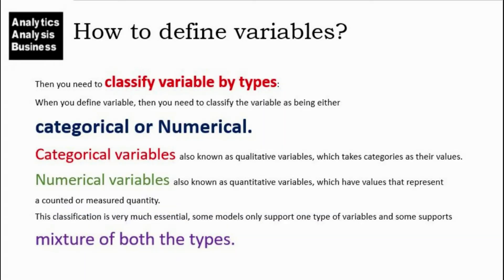Then you need to classify variables by types. When you define a variable, you need to classify it as either categorical or numerical. Categorical variables are also known as qualitative variables, which take categories as their values. Numerical variables are also known as quantitative variables, which have values that represent a counted or measured quantity. This classification is very essential — some models only support one type, and some support a mixture of both types.